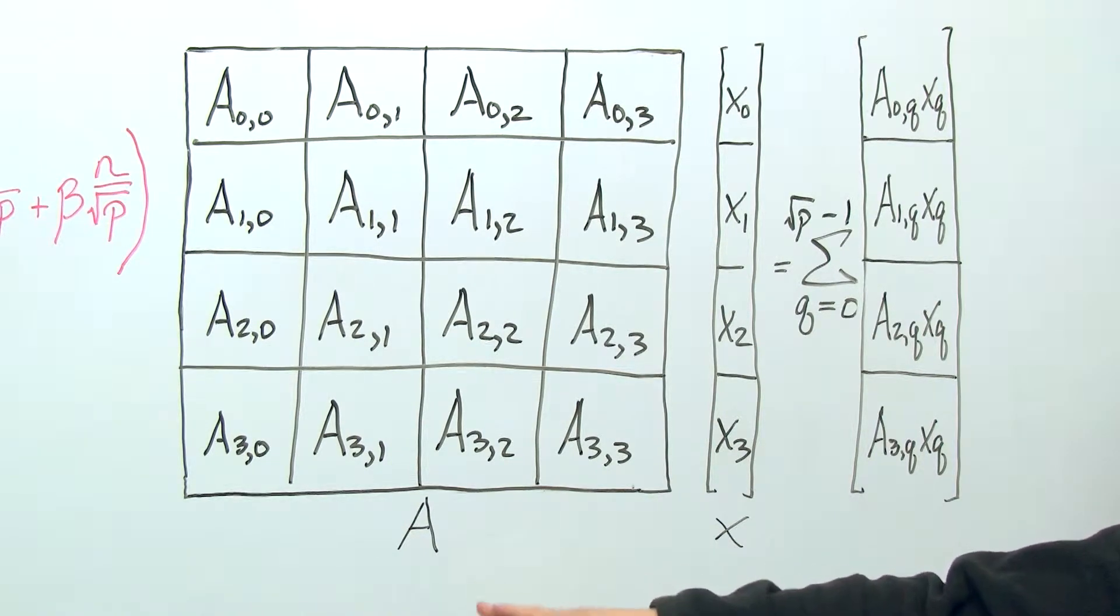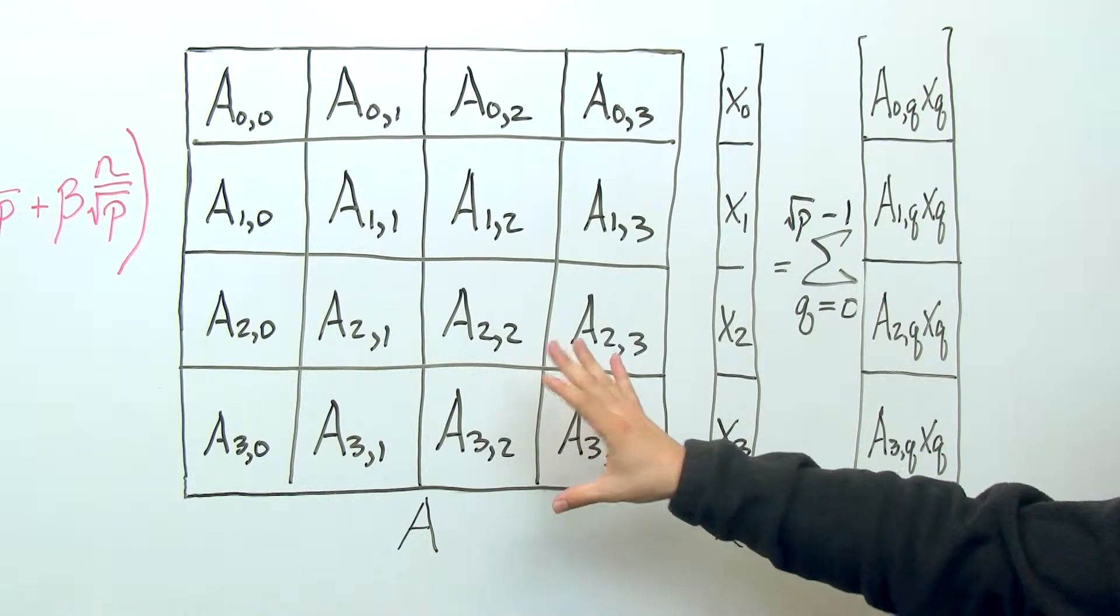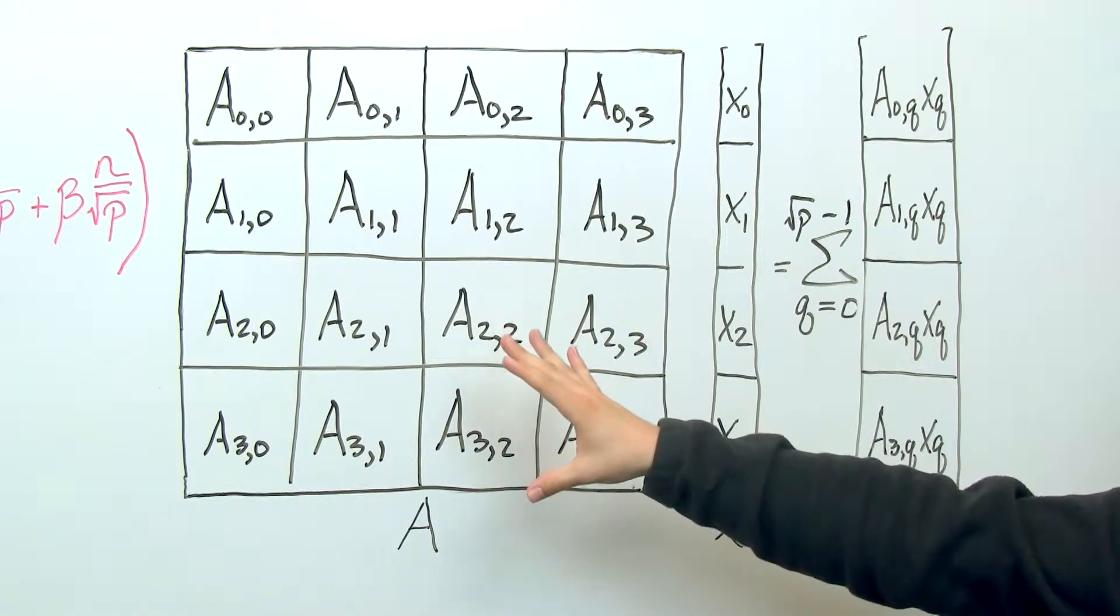Okay, so we're going to continue with an example of using 16 processes, and now rather than dividing up the matrix A into 16 different sets of columns, what we're going to do is divide it up into 16 different submatrices, each of roughly the same size.